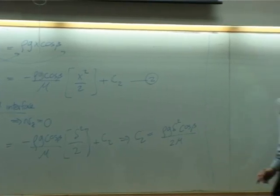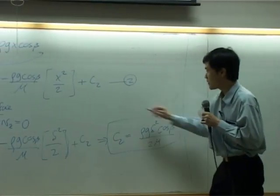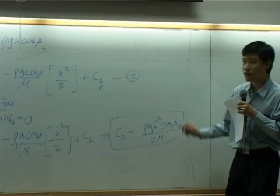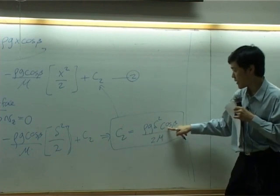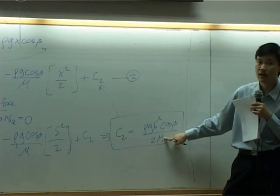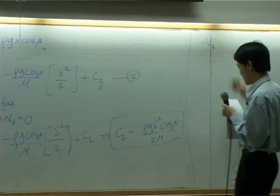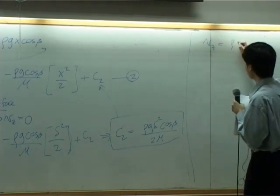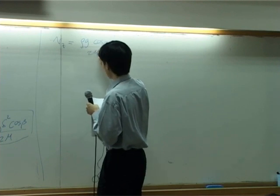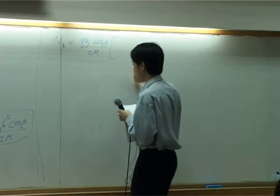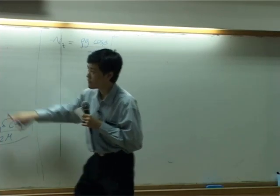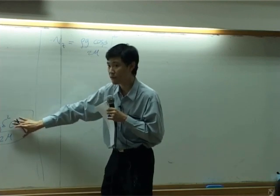So then you can bring c2, plug it back into equation 2. If you do so, you will see that rho g cosine beta and mu, 2 mu, are common, common term. So you can take it out. And this one is positive, that one is negative, so I'm going to bring this one first.